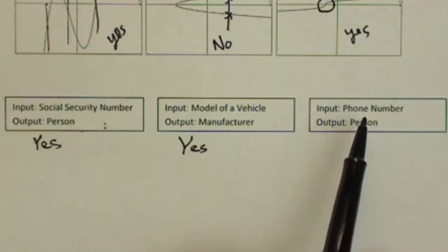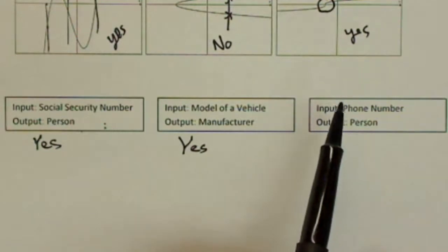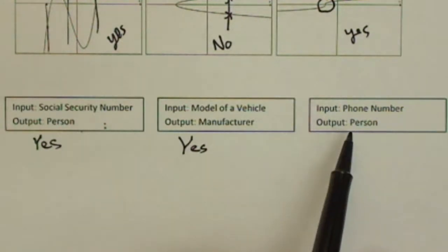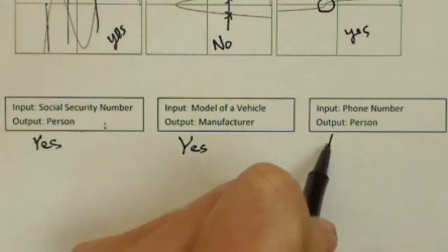What about if the input is a phone number and the output is a person? Nowadays, we're used to one person having one cell phone, and so if you call a particular phone number, it goes to a particular person. So, we could say yes in that situation.